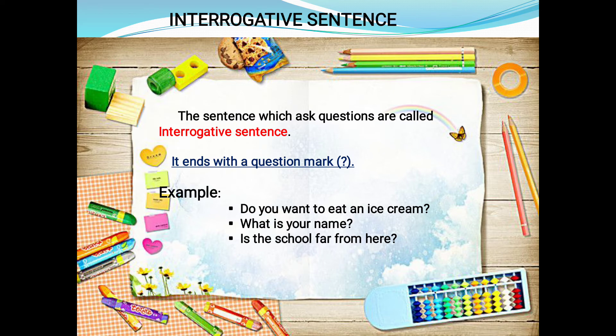Interrogative sentences are sentences which ask questions. For example, a teacher asking in class, 'How many of you have done the homework?' or 'What is your name?' — these are questions. Every interrogative sentence ends with a question mark. Examples: 'Do you want to eat an ice cream?' 'What is your name?' 'Is the school far from here?' Wherever a question mark appears, it is an interrogative sentence.